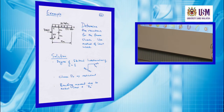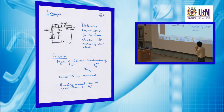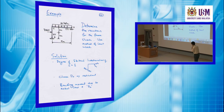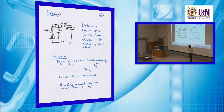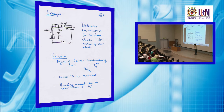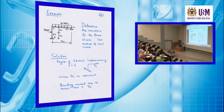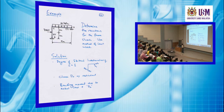Statically indeterminate frame — you have a pin support here and also a pin support here. So this is a very simple statically indeterminate frame. Loading given: 75 kN at mid-height of the column. We have a distributed load of 25 kN per meter, 9 meters here. EI is constant and the same for AC and CD. For this frame, you are asked to find the reactions.